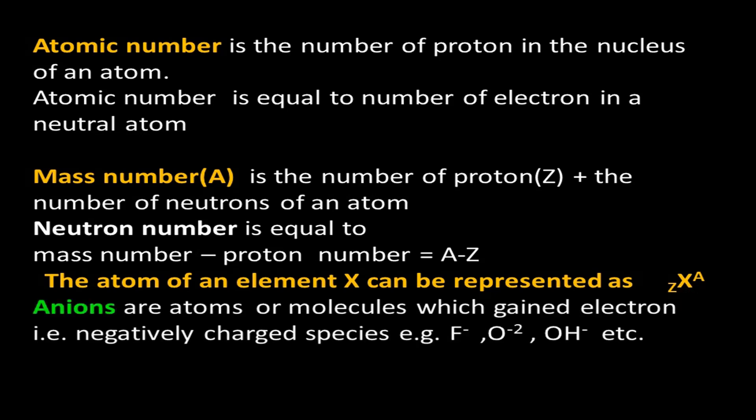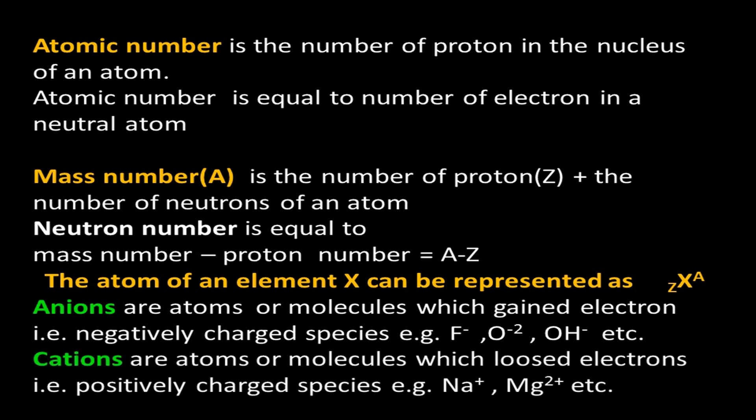Anions are atoms or molecules that have gained electrons, making them negatively charged species. Examples include fluoride ion, oxide ion, and hydroxide ion. Cations are the opposite — atoms or molecules that have lost electrons, making them positively charged. Examples include sodium ion and magnesium ion.